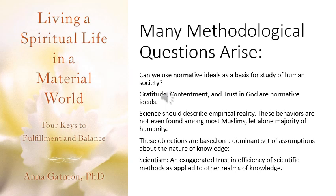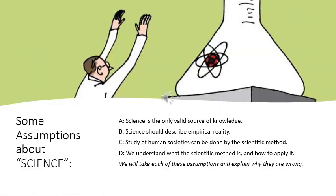All of these objections arise from a certain view of science which is now dominant and this can be called scientism — an exaggerated trust in the efficiency of scientific methods as applied to other realms of knowledge. Scientism can be characterized by four assumptions: that science is the only valid source of knowledge; that science describes empirical reality; that we can study human society by the scientific method; and that we understand what the scientific method is and how to apply it. All of these assumptions are wrong and we will briefly rebut each of them in turn.